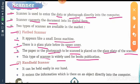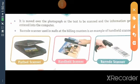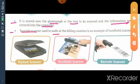Second, handheld scanner. First topic, it can be held easily in our hand. Second, it enters the information which is there on an object directly into the computer. Next, it is move over the photograph or the text to be scanned and information gets entered into the computer. Barcode scanner used in malls at the billing counter is an example of handheld scanner.